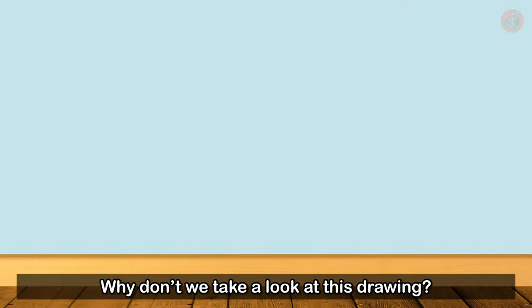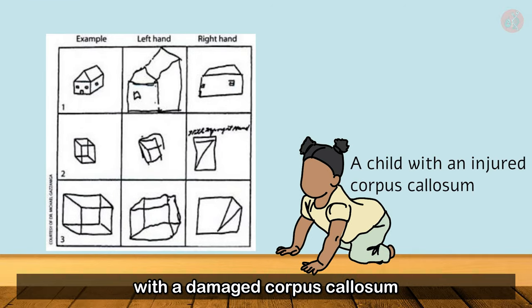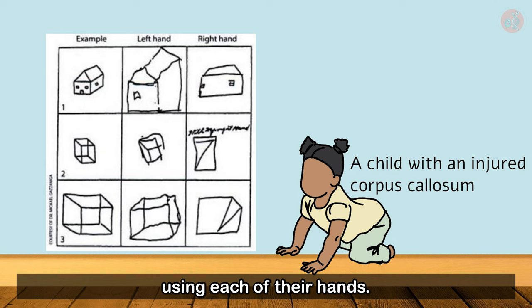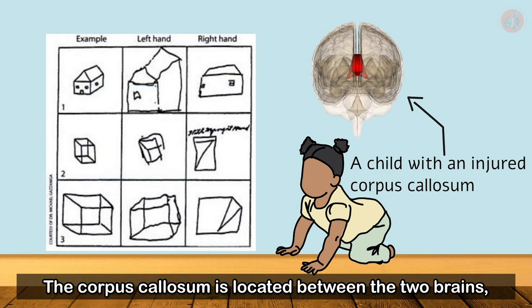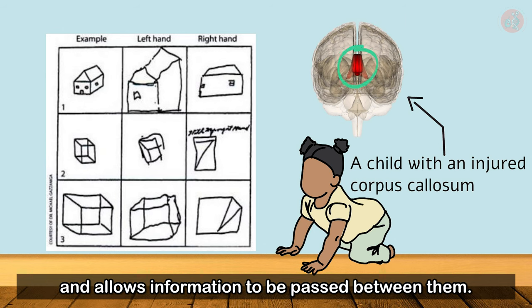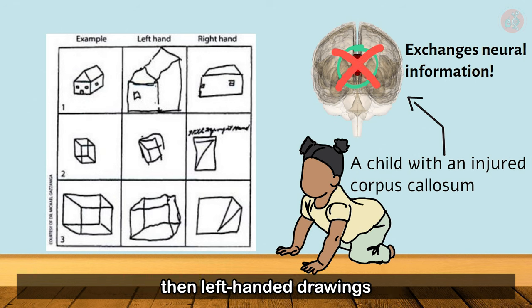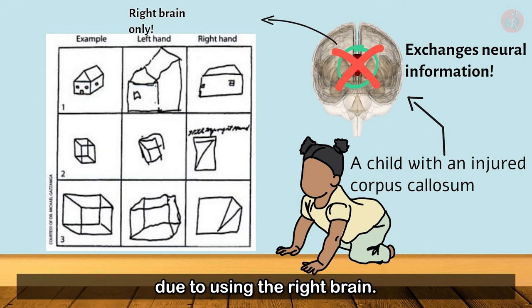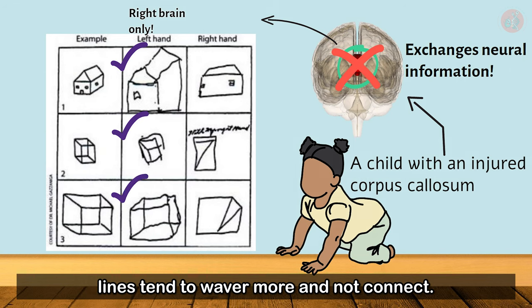Why don't we take a look at this drawing? These shapes were drawn by a child with a damaged corpus callosum using each of their hands. The corpus callosum is located between the two brains and allows information to be passed between them. If the corpus callosum is ever damaged, then left-handed drawings tend to display better spatial sense due to using the right brain. However, because the left brain isn't involved, lines tend to waver more and not connect.